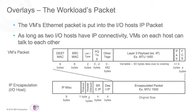The VM's Ethernet packet is actually encapsulated into the NovaLink's IP packet. The VM will send an Ethernet packet with a maximum transmit unit, or MTU, of 1450. That gets put into the NovaLink's 1500-byte packet and sent through the tunnel.